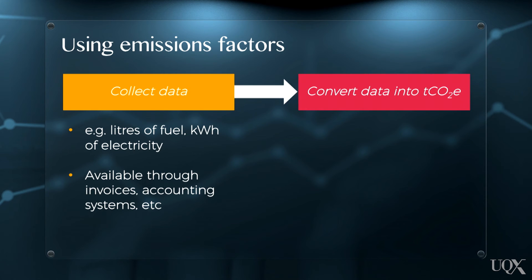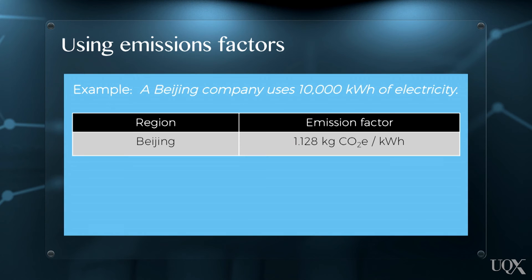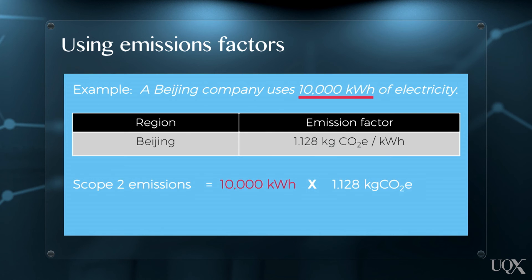It would then convert this data into tonnes of CO2 equivalent by applying the appropriate government endorsed emission factors. For example, the World Resource Institute's set of emissions factors estimate that for every 1 kilowatt hour of electricity used in Beijing, 1.128 kilograms of CO2 equivalent is produced. This means a company based in Beijing that uses 10,000 kilowatt hours of electricity from the local grid has a Scope 2 carbon footprint of 11,280 kilograms, or 11.28 tonnes of CO2 equivalent. The World Resource Institute and other bodies such as the United Kingdom's Department of Environment, Food and Rural Affairs provide a range of emission factors for converting solid, liquid and gaseous fuel data into emissions estimates.